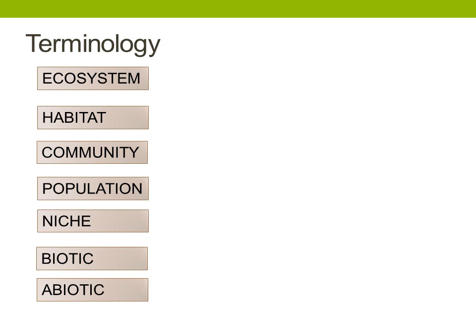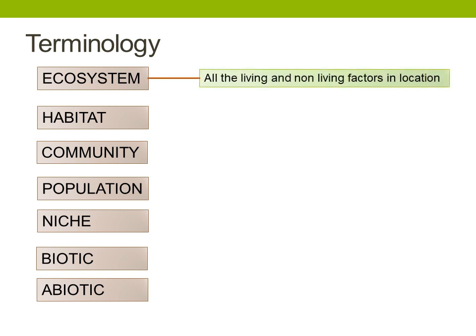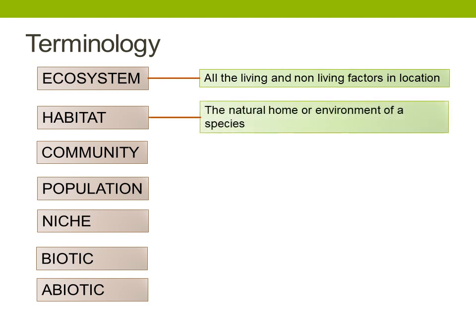Let's start with the term ecosystem. Ecosystems include all the living and non-living factors in the location. So this is an overall term — if we refer to the living and non-living factors we will have included everything that's important within that ecosystem, and we'll look at what we mean by those two terms shortly. Habitat is the natural home or environment of a species. It's a term that we often use but perhaps don't really fully understand what it means.